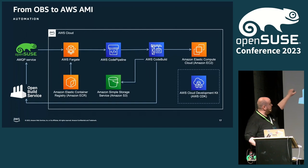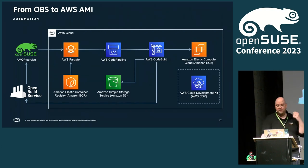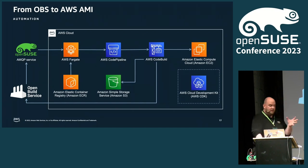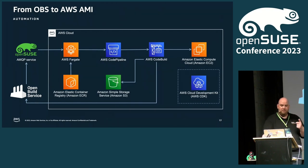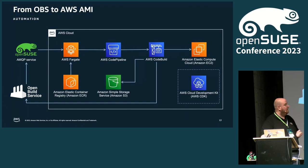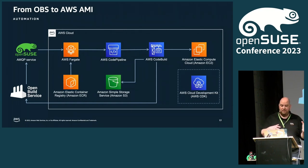OBS signals to AMQP, Fargate receives it, then we trigger AWS CodePipeline. I have three stages in that pipeline: source, build, and test. In the source phase, I just download my source code scripts to make them available for the further stages. Build is then what we saw earlier — it's the download, decompress, upload, import, and register steps, all done by CodeBuild. CodeBuild goes to OBS, downloads the image, decompresses it, saves it in S3, and then does the import as AMI. And then on the right side, EC2 is involved because I wanted to automate my testing.